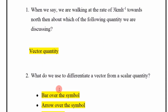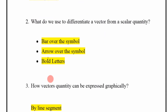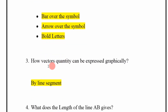Next: what do we use to differentiate a vector from a scalar quantity? We use an arrow over the symbol, or bold letters. Next: how can a vector quantity be expressed graphically? By a line segment.